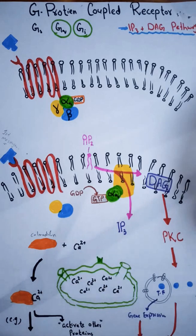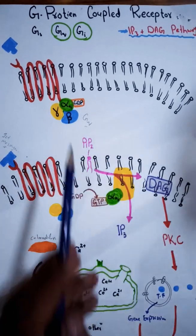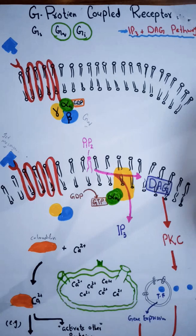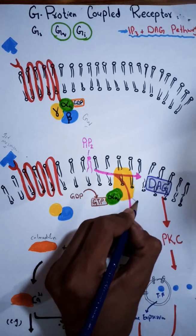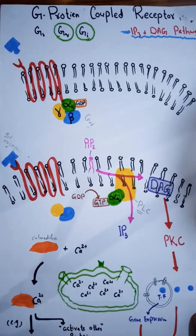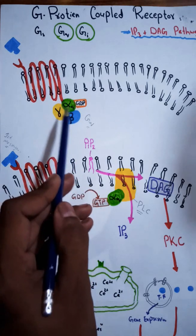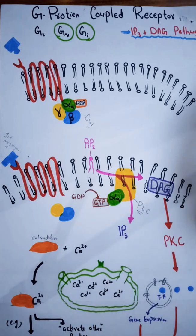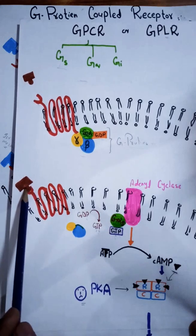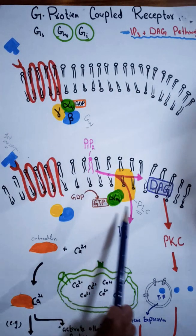Now the alpha subunit of GQ protein — because this is a GQ protein, not GS — will go and bind to another enzyme called Phospholipase C. In contrast, the alpha subunit of GS protein activates adenylyl cyclase, not Phospholipase C. But the alpha subunit of GQ protein will activate Phospholipase C.